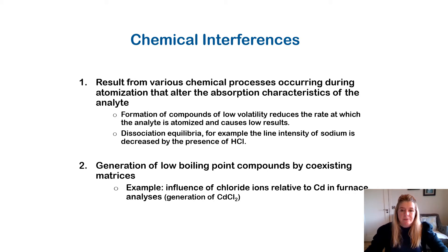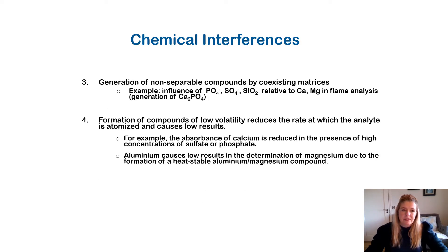Dissociation equilibria — for example, the line intensity of sodium is increased by the presence of HCl, which is hydrochloric acid. Generation of low boiling point compounds by coexisting matrices — an example is the influence of chloride ions relative to cadmium in furnace analysis, where you get a generation of cadmium chloride. Other chemical interferences include the generation of non-separable compounds by coexisting matrices — examples are phosphates, sulfates, and silicates relative to calcium and magnesium in flame analysis.